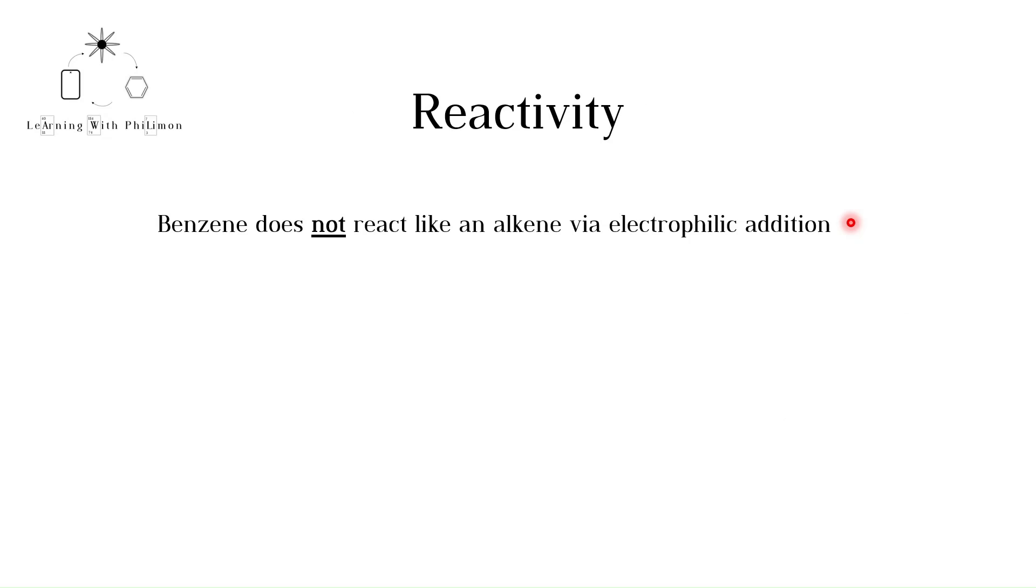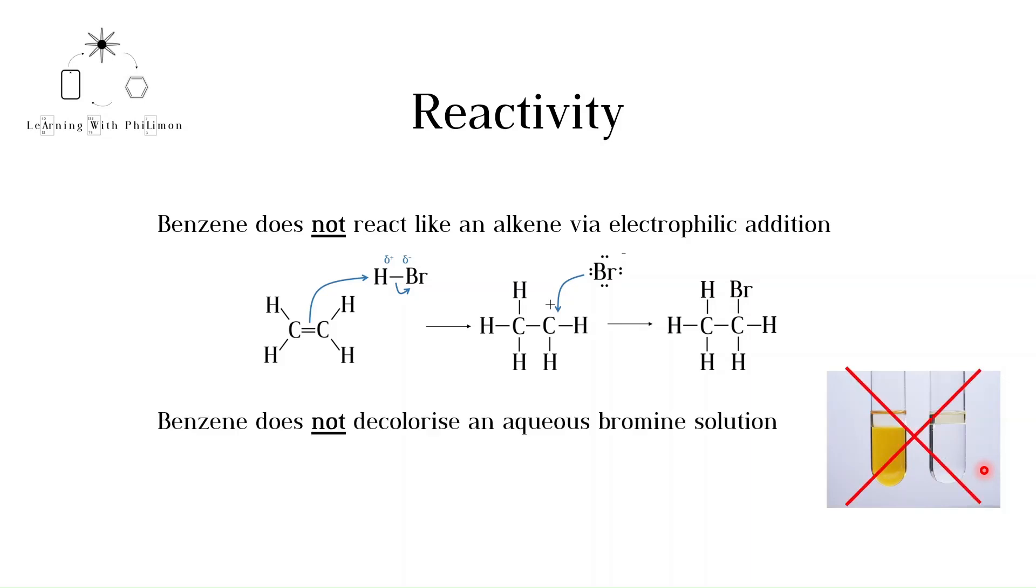If benzene contains three double bonds, it must react like an alkene. Alkenes undergo electrophilic addition reactions as seen in the diagram below. In these reactions, the double bond breaks and each carbon forms two new single bonds. For more on this mechanism, please watch the electrophilic addition video. An example of such a reaction is when an alkene is added to an aqueous bromine solution. As the alkene reacts with the bromine, the bromine solution is decolorized, changes from orange-brown to clear. Benzene would not decolorize an aqueous bromine solution. Benzene does not undergo electrophilic addition reactions but electrophilic substitution reactions. For more on this type of mechanism, watch the next video. This is evidence that benzene cannot contain double bonds.